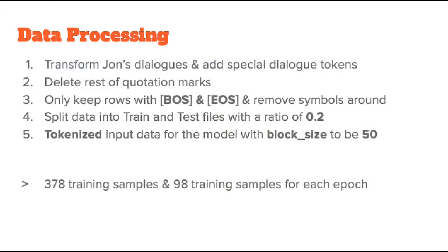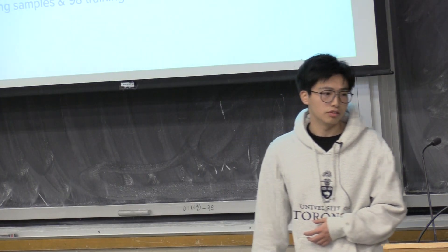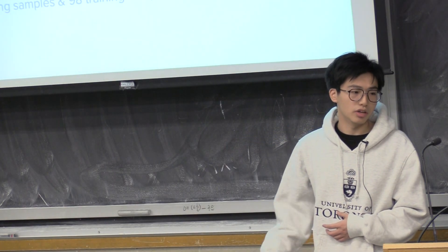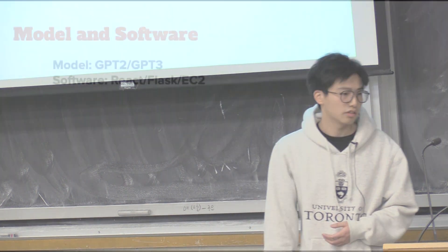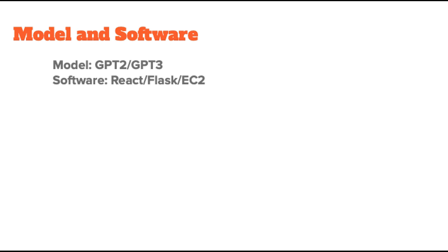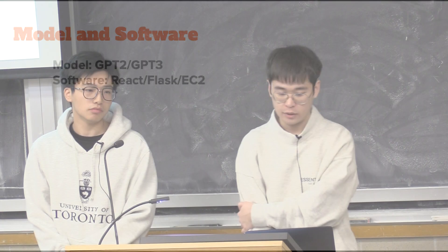Following the processing, we needed additional steps to clean the dataset, based on our experience from experiments. We split the data into train and test files with a ratio of 0.2, and each sample includes 50 tokenized words. For our model, we use a model pre-trained on GPT-2-Large, then fine-tune it with our pre-processed data.